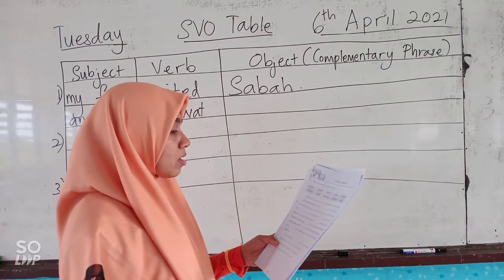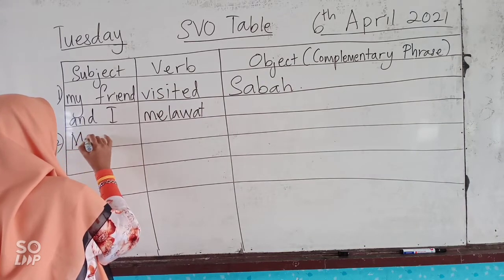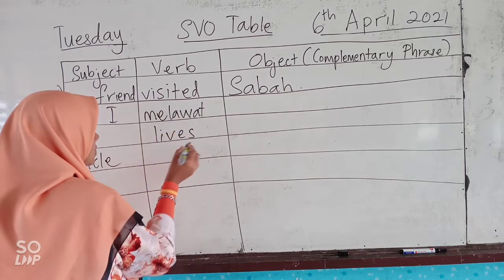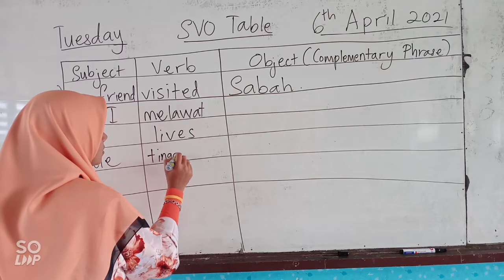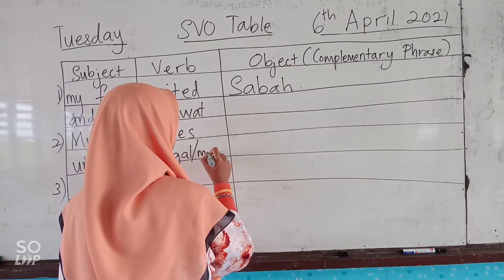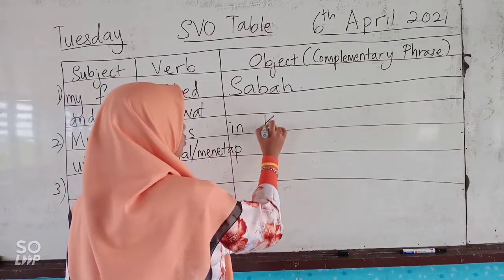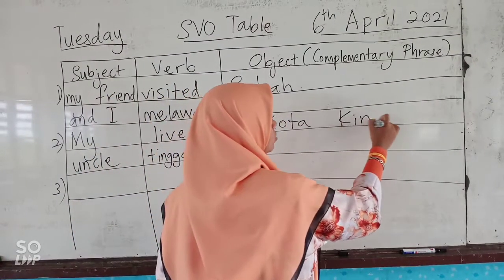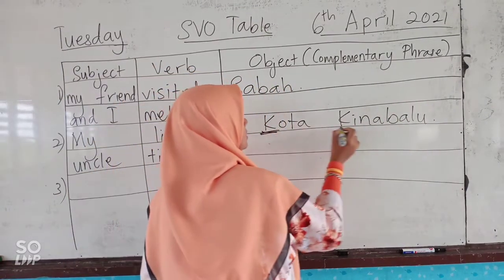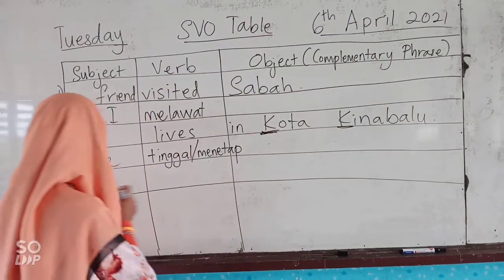And then the second sentence: 'My uncle lives in Kota Kinabali.' The subject is 'my uncle.' The verb is 'lives,' which means 'tinggal.' The object is 'in Kota Kinabali.' Make sure you capitalize it — KK ni kena mengucap capital, it's a proper noun, kata nama khas.